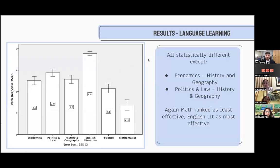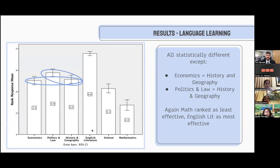The same is true for the following two graphs. Language learning results were very similar — we found a lot of statistical differences, except for economics and history and geography, and politics and law and history and geography. The remainder were seen as different, with English literature at the top and mathematics at the bottom again.